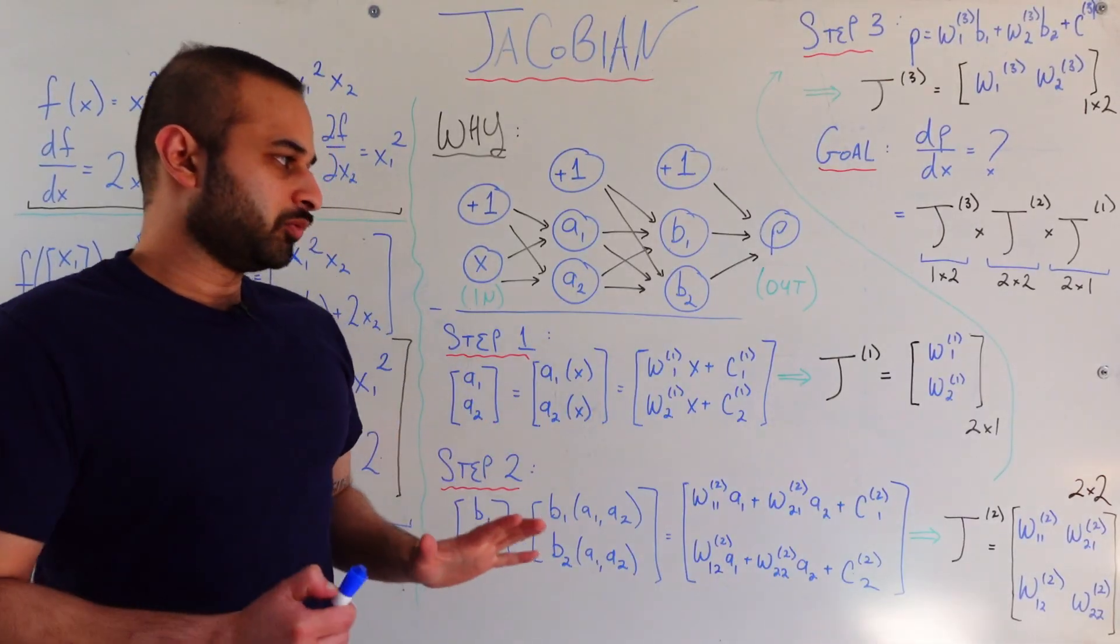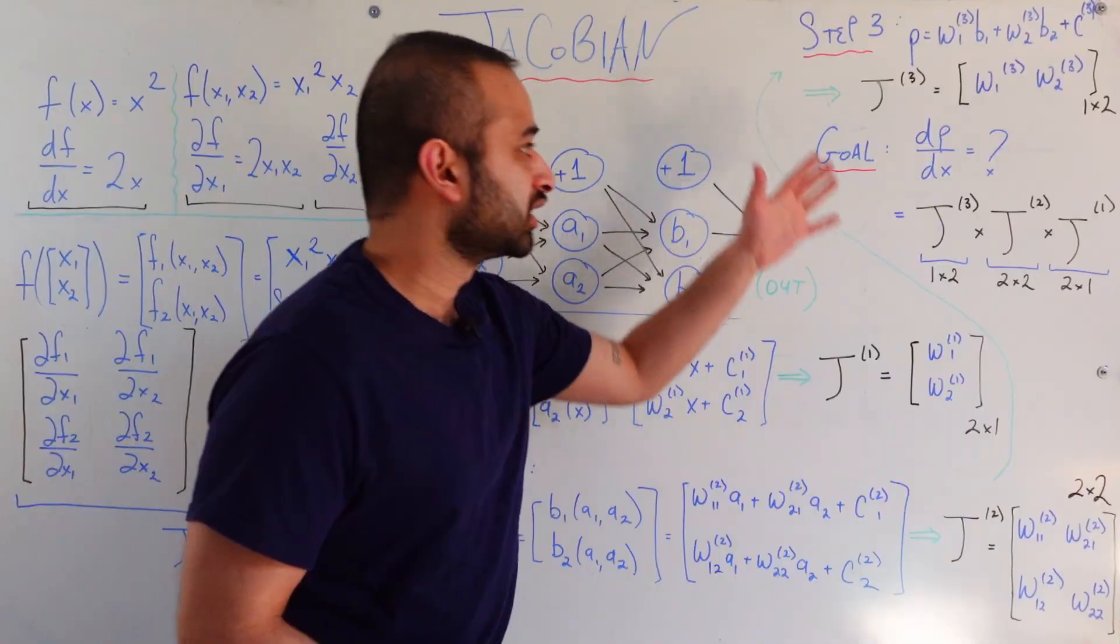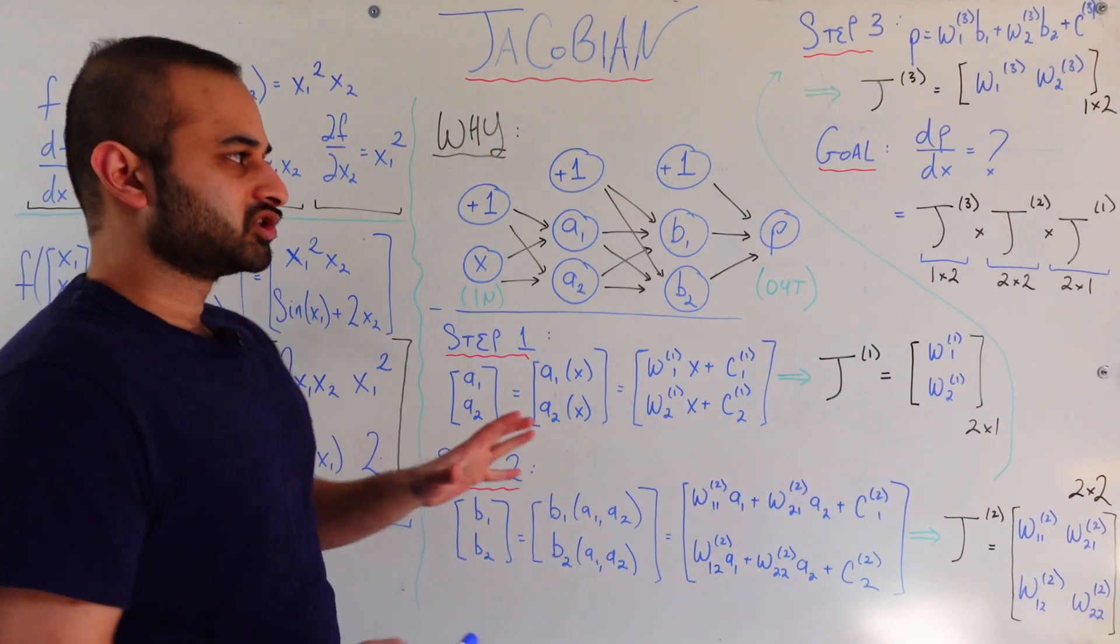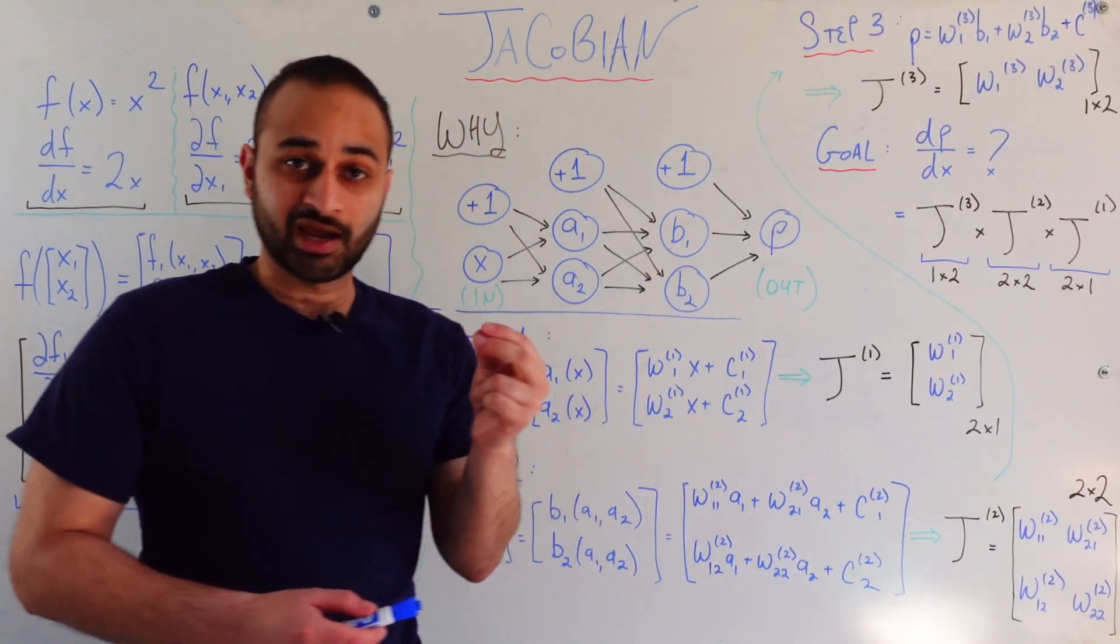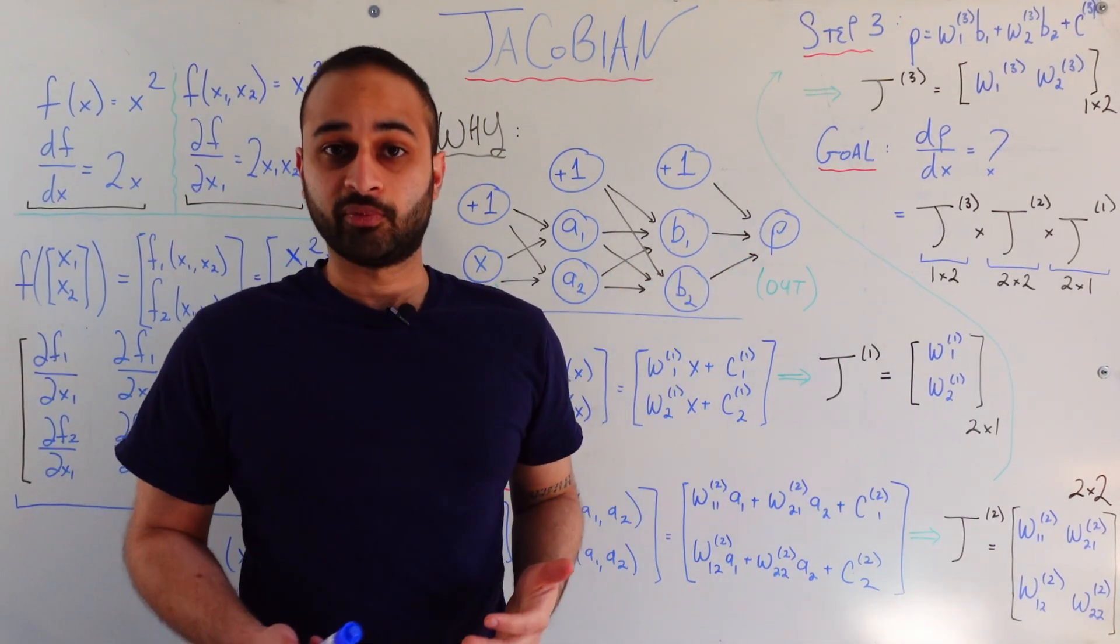So take a minute, pause, rewind, write some stuff on a piece of paper. Make sure you are convinced that these Jacobians are correct. Make sure that this architecture roughly makes sense. And now let's revisit our goal, which is trying to figure out how does a small change in x, which is our input, affect the output, the final output, which is p.